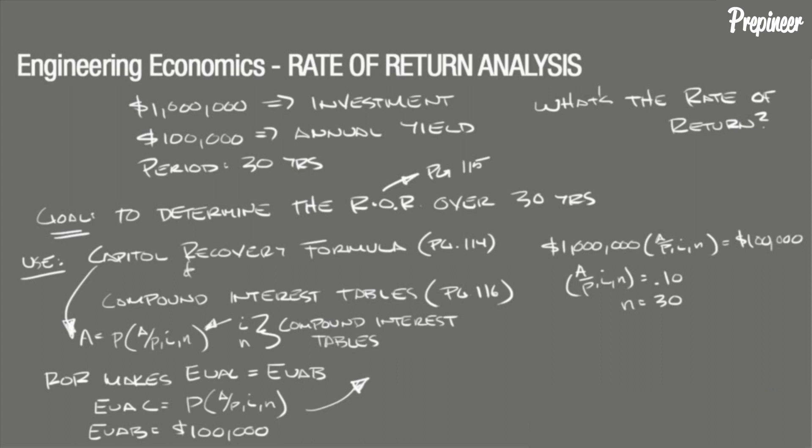So referencing the compound interest table starting on page 118 of the NCEES Supplied Reference Handbook, relocate the period N equal to 30, which is the far left column, and work our way horizontally to the A over P column in each table to determine which one has the value of 0.10.